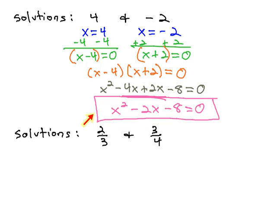We can do much the same thing when our solutions are fractions, such as 2 thirds and 3 fourths. We can say x equals 2 thirds and x equals 3 fourths, and the only difference in this problem is we have some fractions.